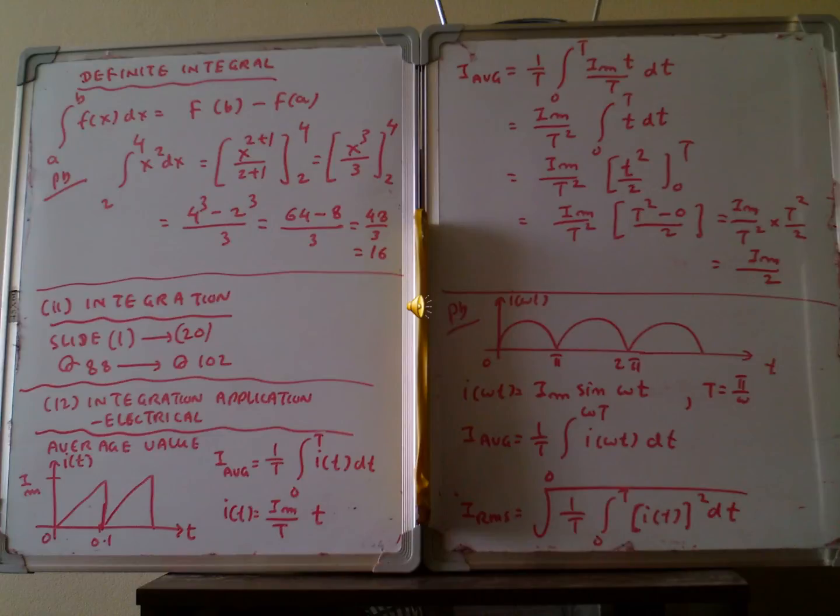The period is T by π, so we have to determine i average. We write down the equation for i average: i average equals 1/T integration from 0 to T of i(t) dt. We need to find the function i(t), which is i_m/T multiplied by t. Then we substitute into the equation.